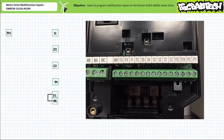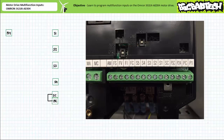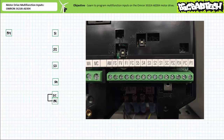The OMRON 3G3JX AE004 motor drive comes shipped with a shorting bar between terminals P24 and PSC, which assumes a sinking relationship. This is nonsense. For this reason, we'll swap the location of the shorting bar between terminals PSC and SC. This assumes a proper sourcing relationship. All is well in the universe.